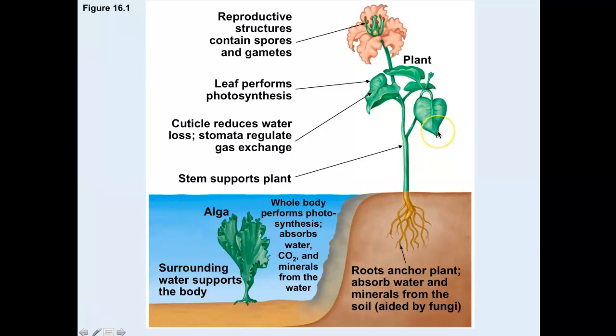Remember that plants create their own sugar — their leaves are responsible for manufacturing glucose through photosynthesis, and the minerals and water come from the roots.